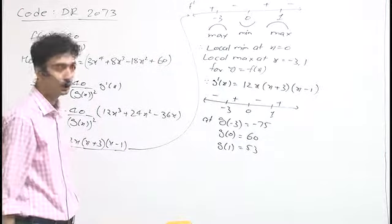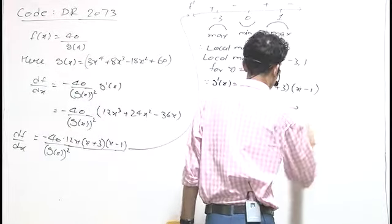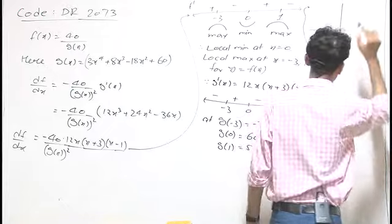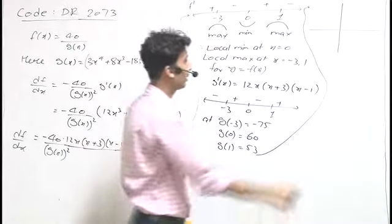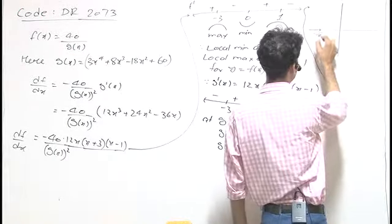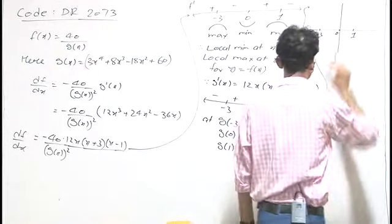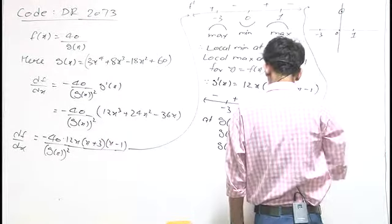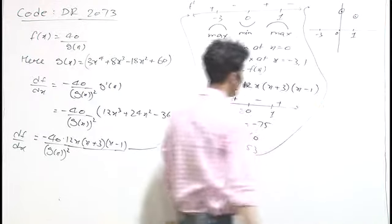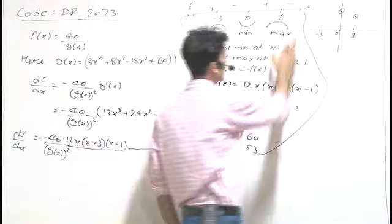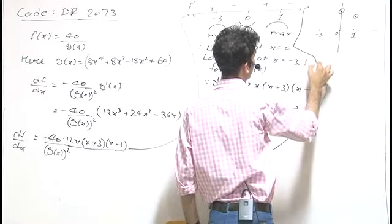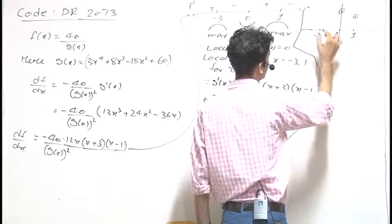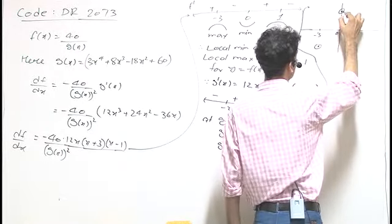Drawing a rough figure of y = g(x), we have stationary points at x = -3, 0, and 1. At x = 0, g(x) = 60; at x = 1, g(x) = 53; and at x = -3, g(x) = -75. This gives us a rough idea of the figure of g(x).